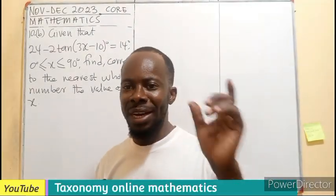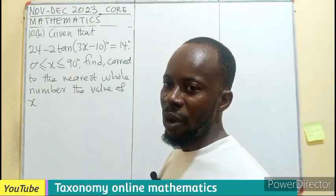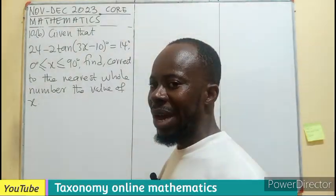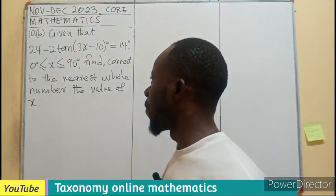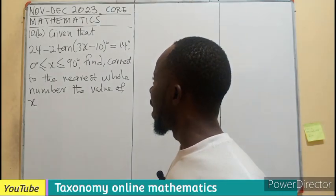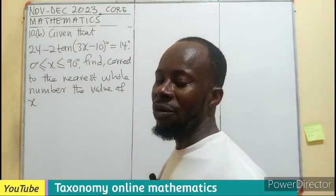Hello, question 10B, Nov-Dec 2023, for Mathematics. Given that 24 minus 2 tan(3x minus 10 degrees) is 14 degrees, where x is from 0 to 90 degrees, you have to find correct to the nearest whole number the value of x.